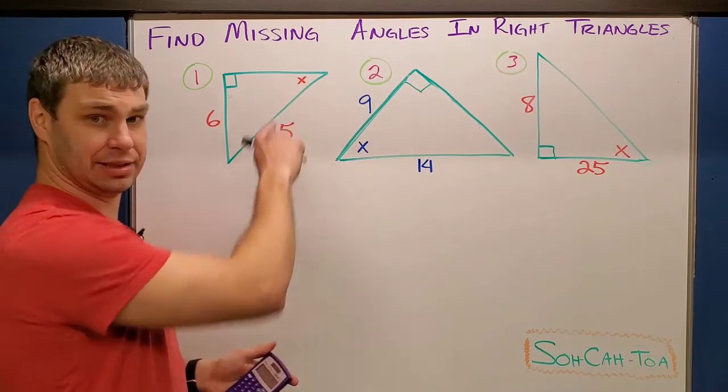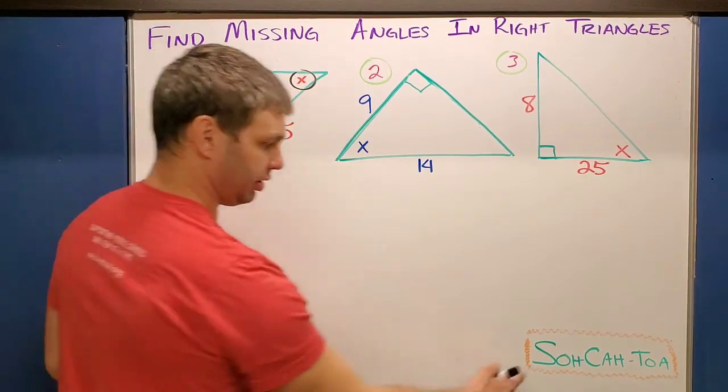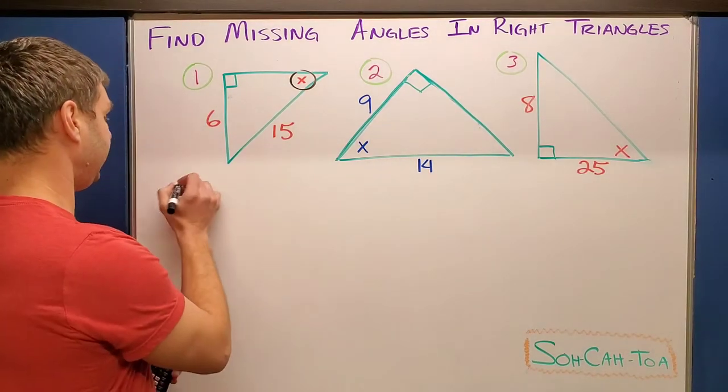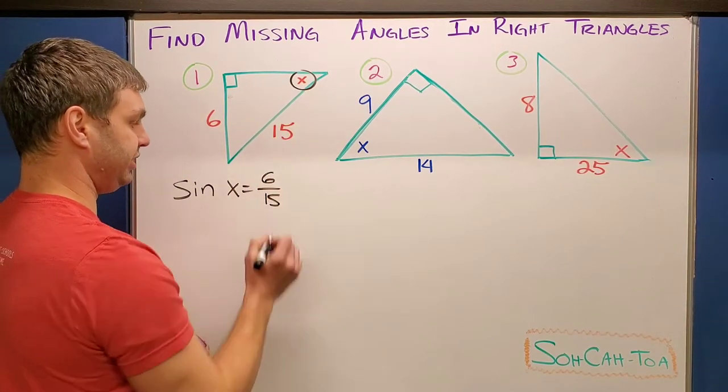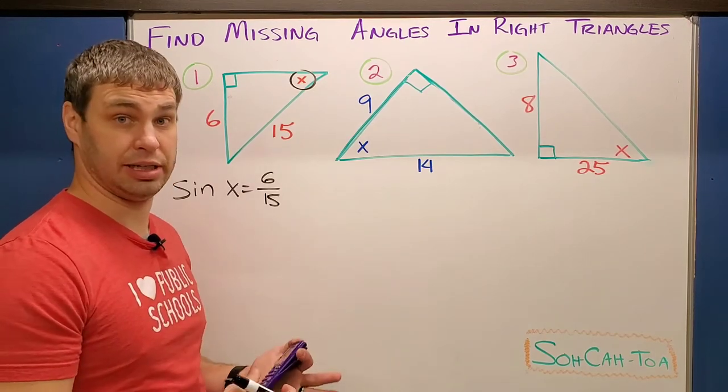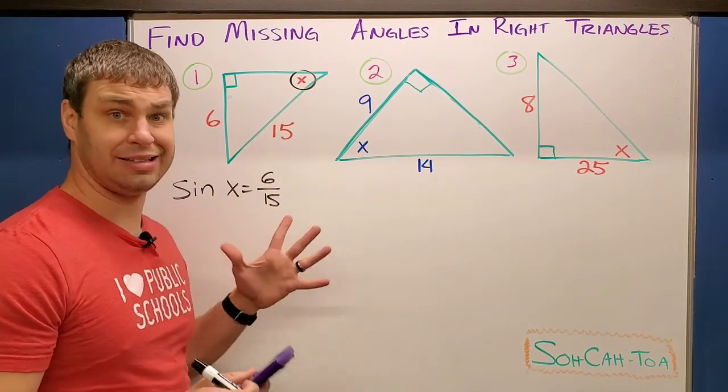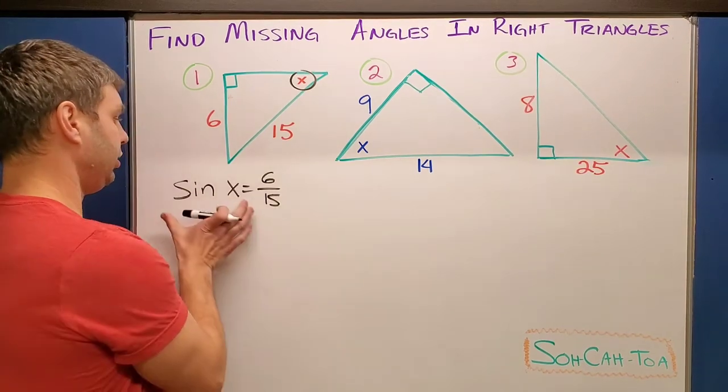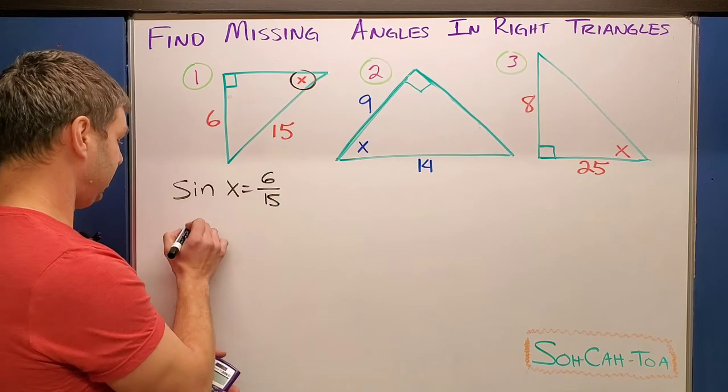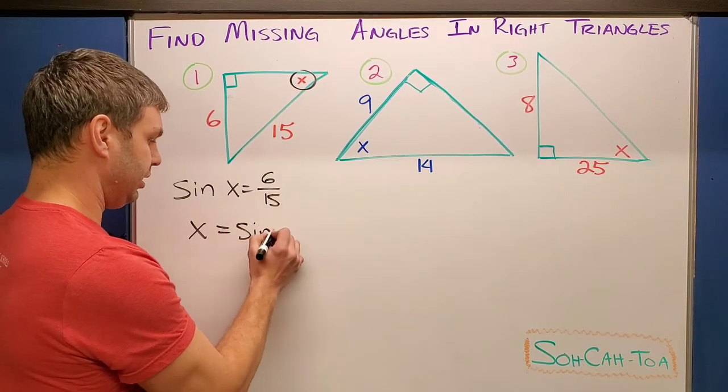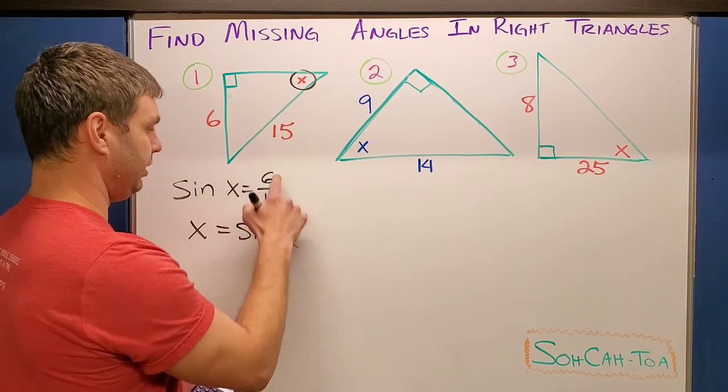Starting with number one, we're looking to find X up here in the corner. Compared to that angle X, we have the opposite and the hypotenuse. Opposite and hypotenuse corresponds with our sine function. So let's write that out: sine of my angle X equals the opposite 6 over the hypotenuse 15. When we were finding missing side lengths in right triangles - I'll put a video for that up there if you need it - we had a variable on the right side. This time our variable is on the left side, so to solve when our variable is on the left, we have to take the inverse of whatever trig function we're using. In this case, we're using sine. So I'm going to say that X equals the inverse sine - remember that's that same trig function with the negative one up here - and then it's going to be 6 over 15.